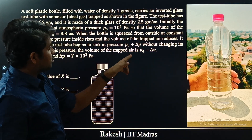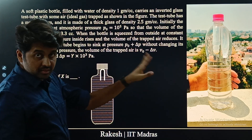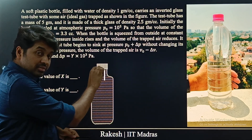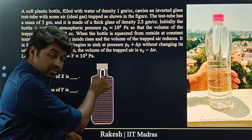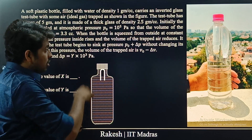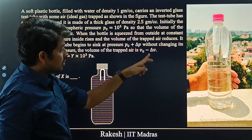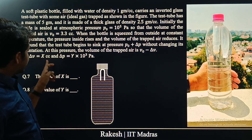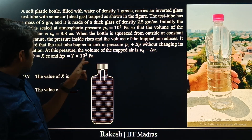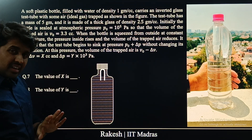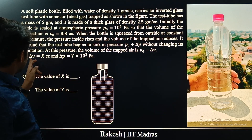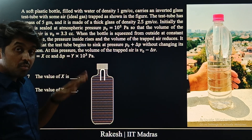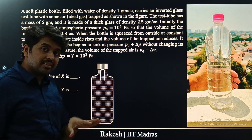At this pressure, the volume of the trapped air is V0 minus ΔV. So because of increasing the pressure, the volume of trapped air decreases to V0 minus ΔV. The question is asking us: how much has the volume decreased (ΔV) and how much has the pressure increased (ΔP)?